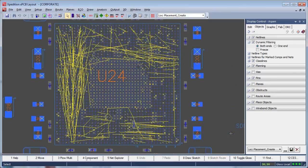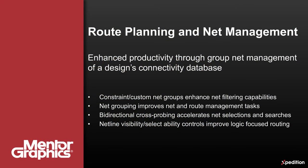The user simply zooms or windows into an area and is able to visually eliminate unwanted netlines. As you've seen, Expedition's route planning and net management capabilities add substantial productivity improvements over conventional layout methods. Whether using automatically generated constraint or personally created net groups, these provide designers with a multitude of net and route filtering capabilities. Net groups also improve difficult net and route management tasks. Today's complex and high net count designs bring their own challenges, but with Expedition's feature-rich bi-directional cross-probe coupled with improved netline visibility and selectability controls, it accelerates net searches and selections and delivers enhanced logic-focused routing. If your design team desires this kind of productivity-enhancing power, please visit us at Mentor.com.